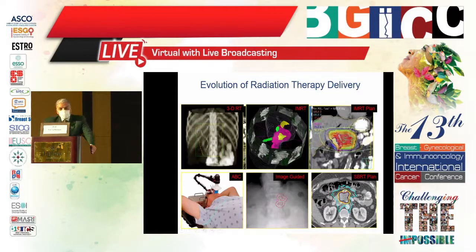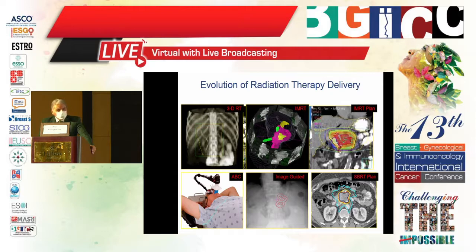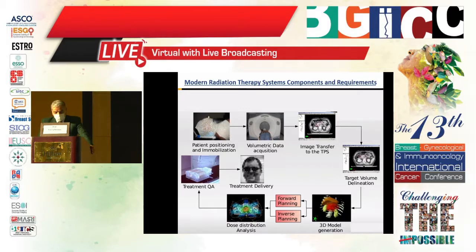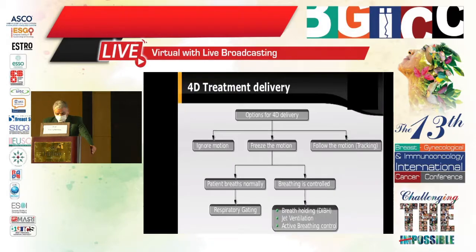These are the phases of evolution of radiotherapy — from 2D to 3D to IMRT to MIT planning and SBRT. As Dr. Rika mentioned, using image-guided and active breath control. Modern radiotherapy systems require good patient positioning and immobilization, volumetric data acquisition, image transfer to the treatment planning system, target volume delineation, 3D model generation, forward or inverse planning, dose distribution analysis, treatment quality assurance, and finally treatment delivery.